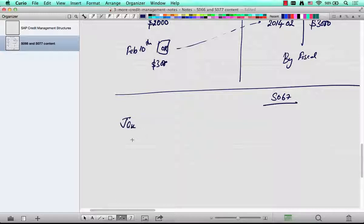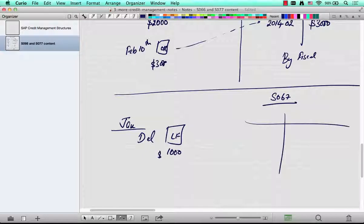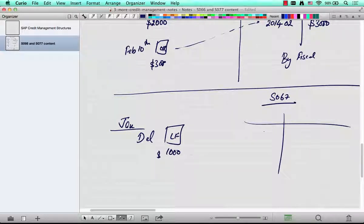January, but instead we're going to take the delivery. And the delivery is for $1000 and this table is going to get updated with the customer or the payer. So who is the payer? Say $1000. And what's the value? $1000.